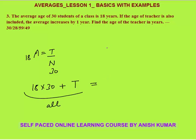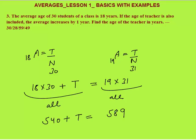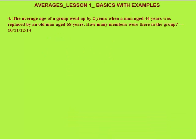With the teacher included, N becomes 31 and average becomes 18 + 1 = 19. So total = 19 × 31 = 589. Equating: 18 × 30 + T = 589 → 540 + T = 589 → T = 49 years.